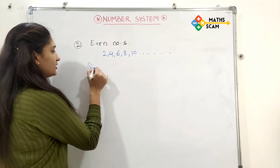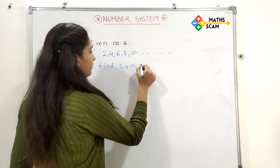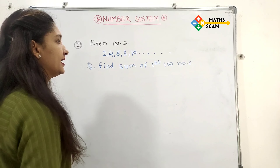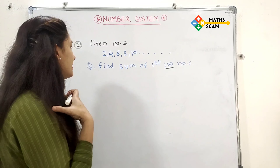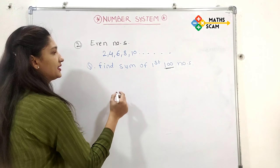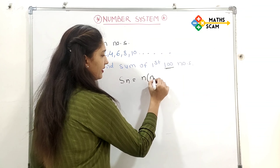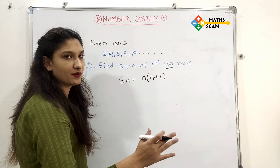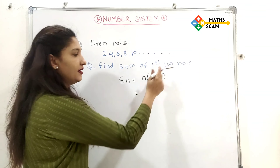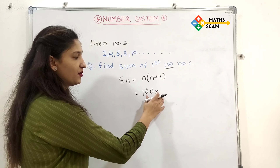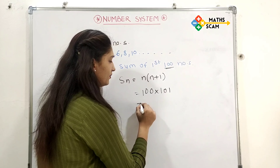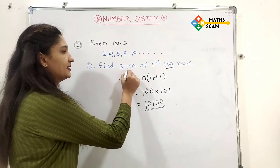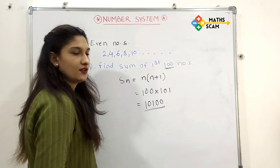What if a question comes: find the sum of the first 100 even numbers? Here n is 100. The formula for even numbers is n into (n+1). The last number given is 100, so multiply it by its next number: 100 plus 1 equals 101. So 100 into 101. The answer is 10100. So the sum of the first 100 even numbers is 10100.